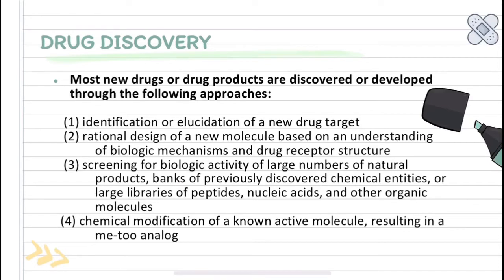Third is screening for biologic activity of large numbers of natural products, banks of previously discovered chemical entities, or large libraries of peptides, nucleic acids, and other organic molecules. Fourth is chemical modification of a known molecule resulting in a me-too analog.